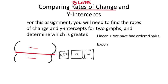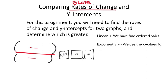If the graph is curved—exponential—then we use the x-values from the interval. The interval has square brackets like this, then a number, a second number, and it closes with a square bracket. Both of those are x-values.